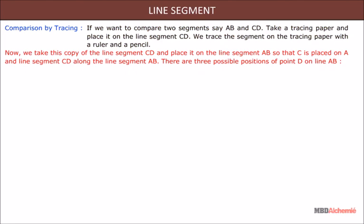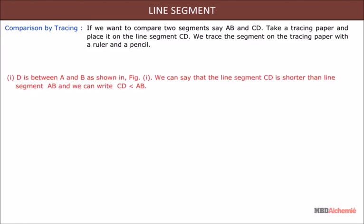Now take this copy of line segment CD and place it on line segment AB so that C is placed on A, and line segment CD is along line segment AB. There are three possible positions of point D on line AB. First, if D is between A and B as shown in figure one, we can say that line segment CD is shorter than line segment AB, and we write CD < AB.